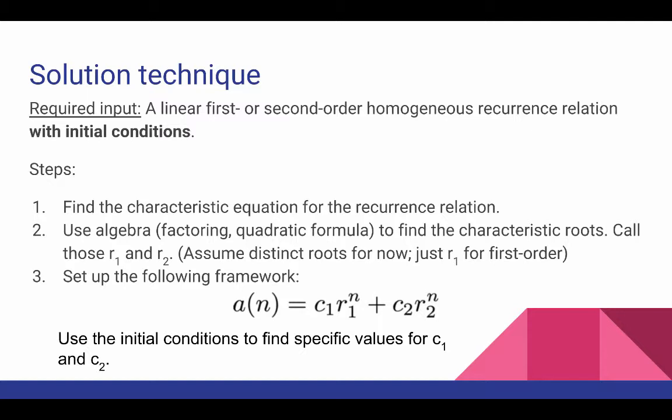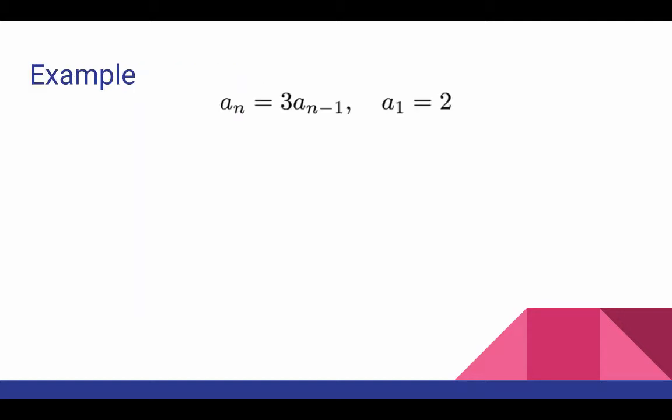And our job is to find the values of c1 and c2 that satisfy the initial conditions. So let's look at an example where we have a_n equals three times a_(n-1). And a single initial condition of a1 equals two.